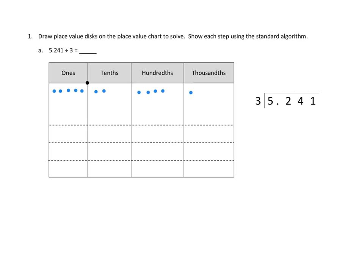Now, we're going to divide that number — represented by those dots — into three equal parts. We draw lines on the place value chart to create three rows. We start with our biggest unit, the ones. There are five ones and we're trying to put them in three groups. We can only take care of three of them — one in each group — but we can't divide the two remaining ones equally across three groups.